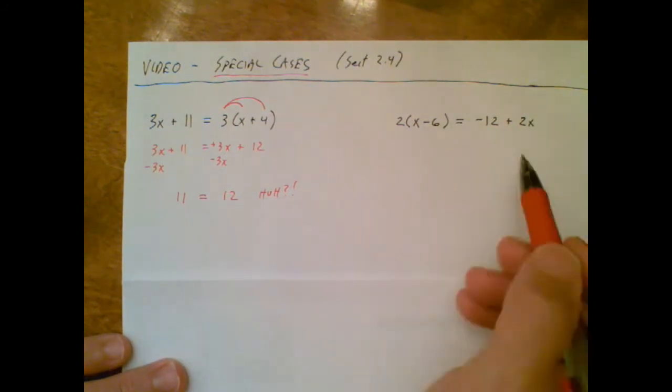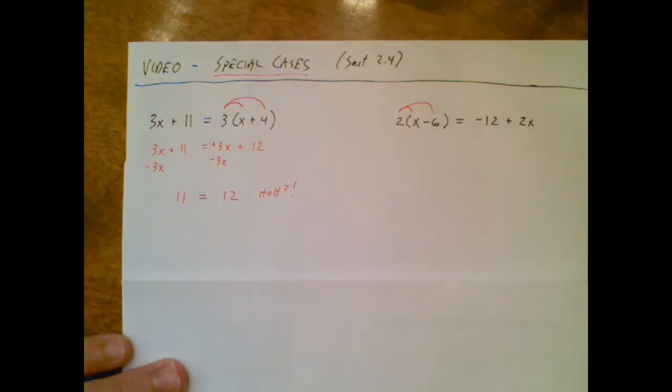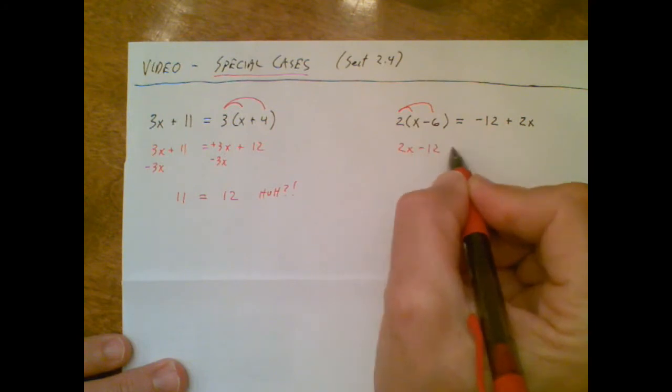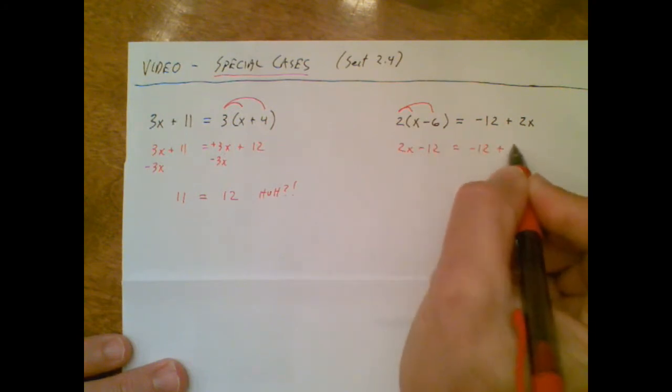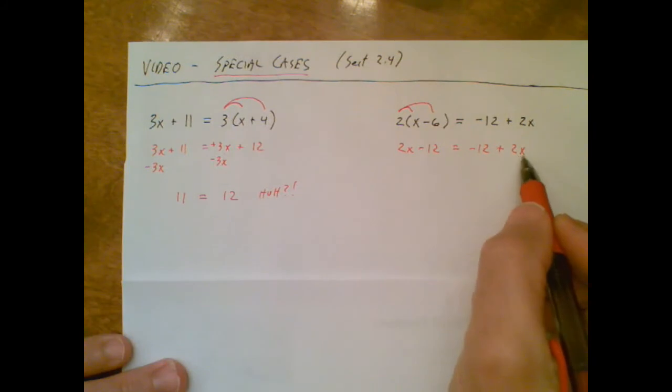I'm going to distribute that 2. There's a 2x on the right side, there's a 2x on the left side. Let's move one of them, let's move this guy over there. I subtract 2x, I subtract 2x.